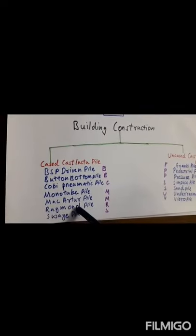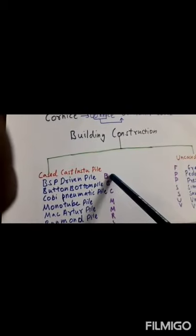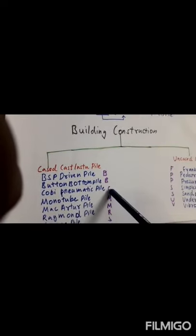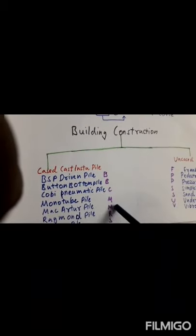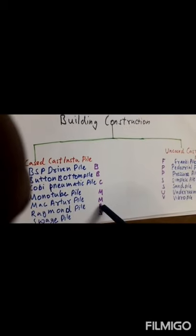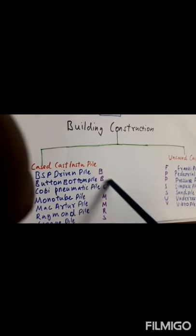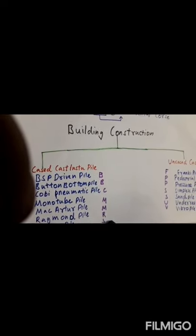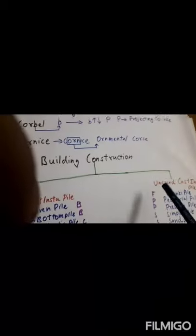The types of cast-in-situ piles include: monotube, Mac Arthur, Raymond, swage, uncased cast pressure pile, simplex, underreamed, and vibro piles.